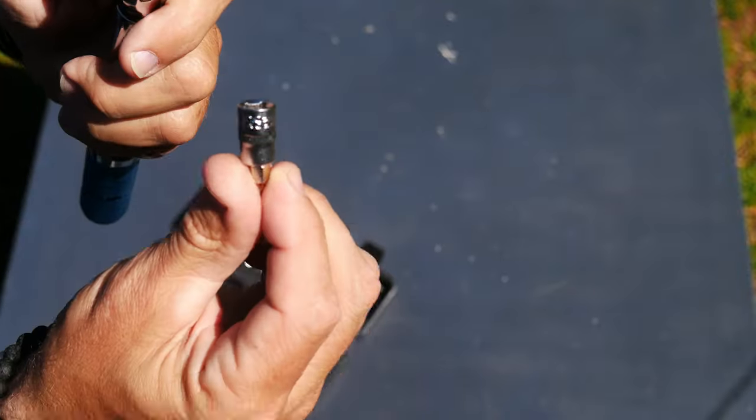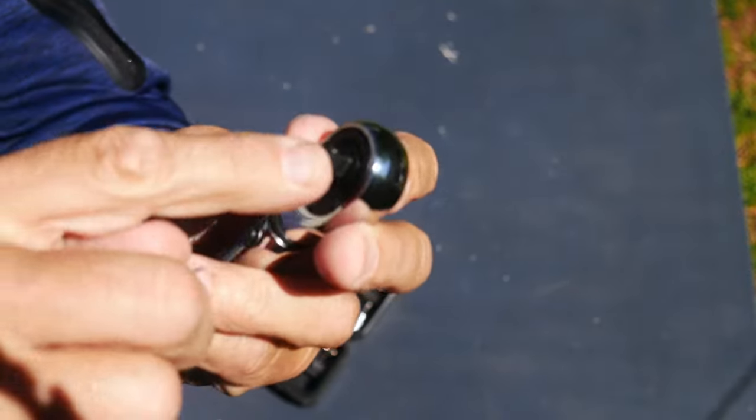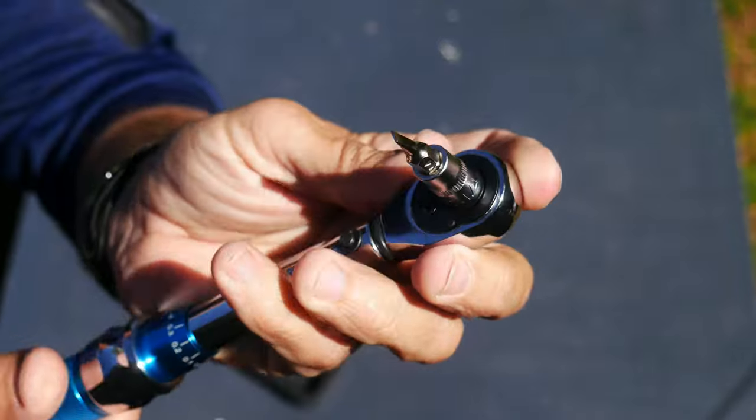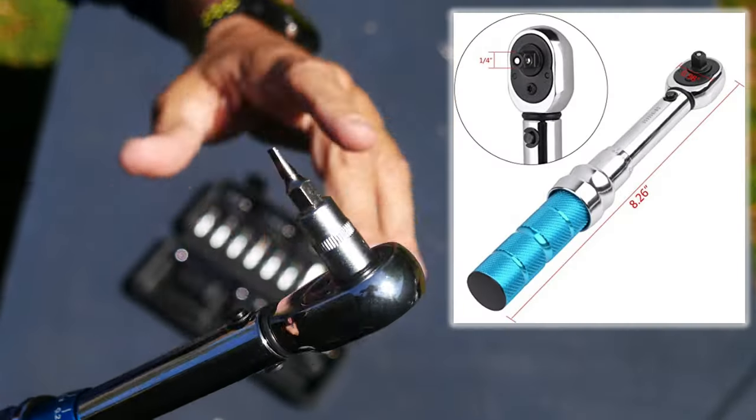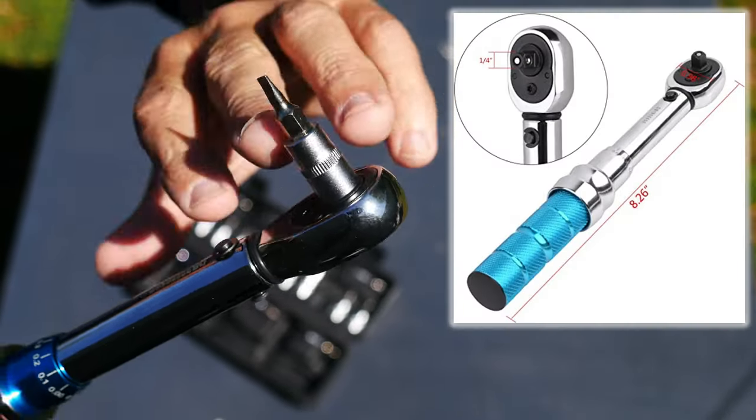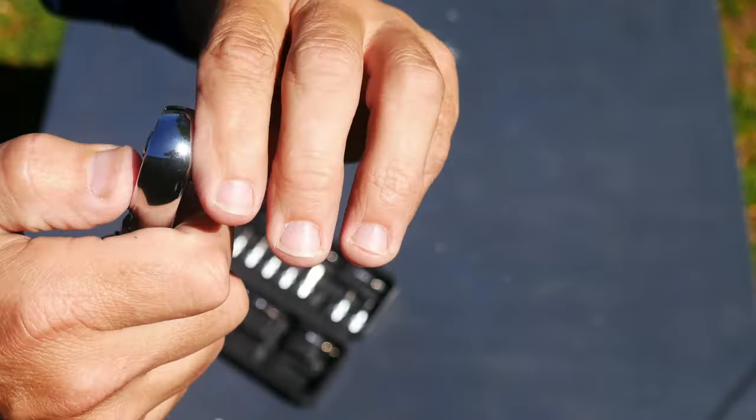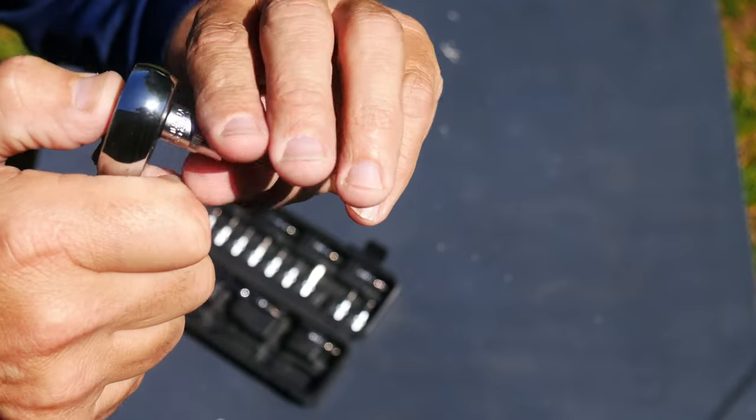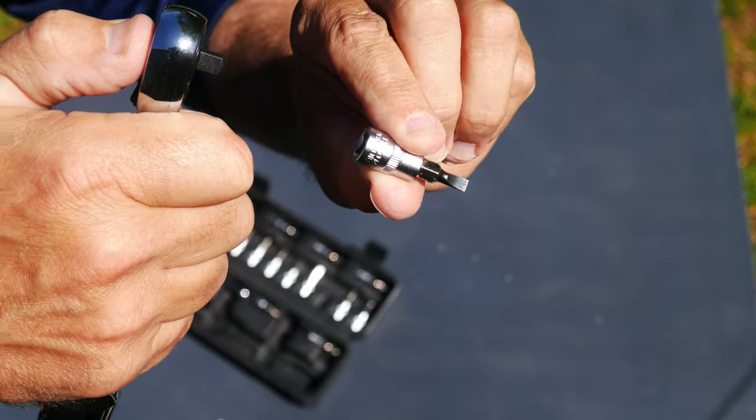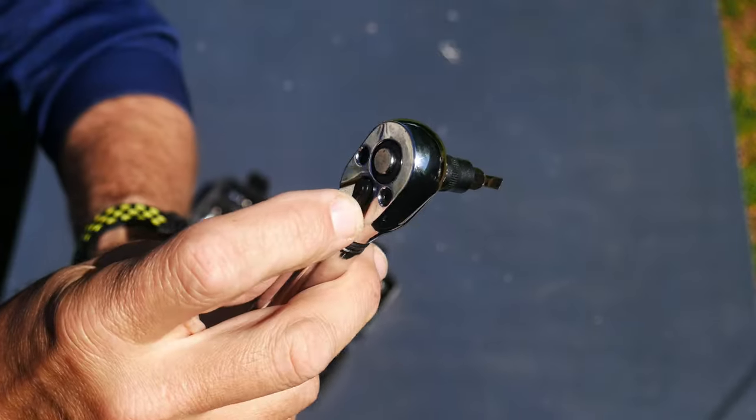Then you have the knob here which is to put the bits on - that's quarter inch right there. Those are all quarter inch, they'll go on there, so any type of quarter inch socket set will also work on this. Now it's locked in there. I always like a ratchet that has a locking head on it like that. To remove it you push that down.